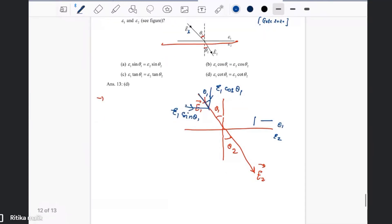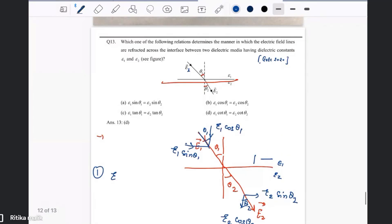And similarly we can also break E2 into perpendicular and parallel components. So the parallel component, this angle is theta 2, so we have E2 cos theta 2 and E2 sin theta 2. This is the parallel component.